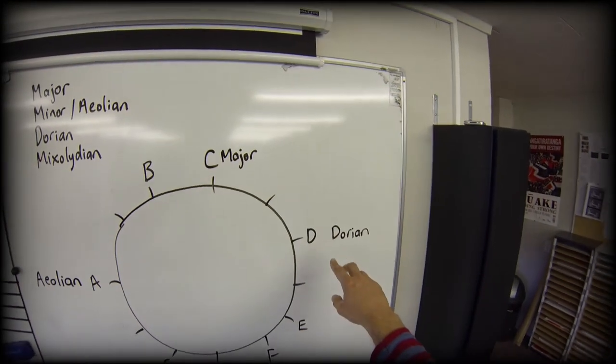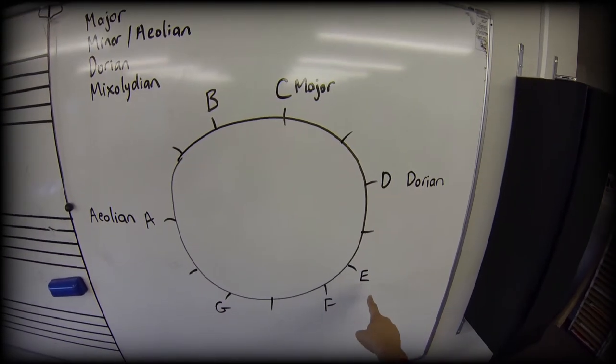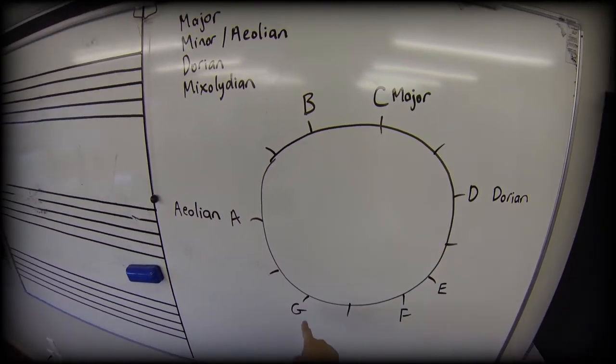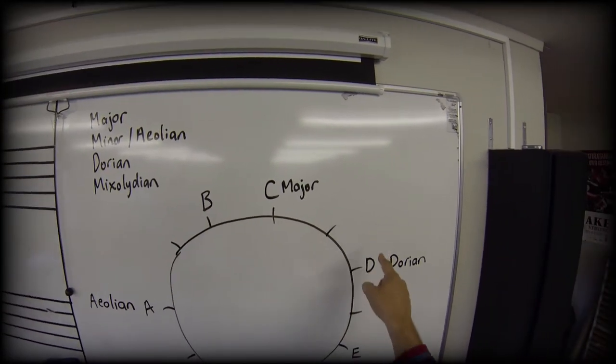So the dorian mode steps like this: root, two, one, two, two, two, one, two.